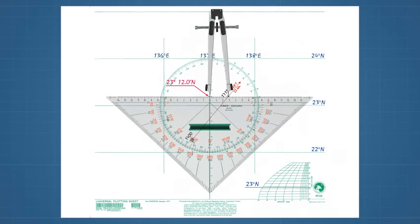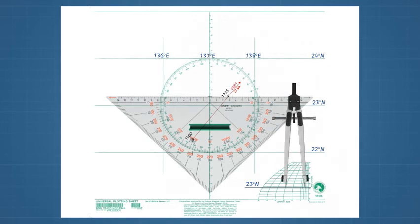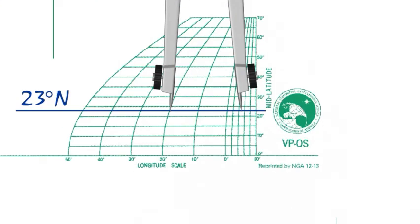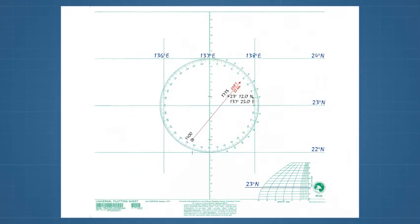To get the longitude, use the horizontal spread between 137 degrees east and the 1715 DR. Measure the spread on the established longitude scale to get the minutes. This should be about 20 and 5. Hence, the 1715 longitude is 137 degrees 25 minutes east.